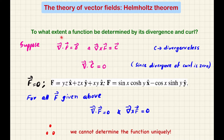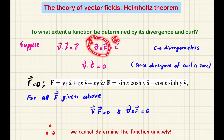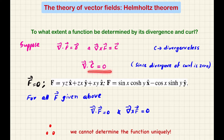Suppose you are given the divergence of a vector function: del·F = D, where D is a function, and del×F = C, where C is another vector function. For consistency, you can take C to be divergence-less, because the divergence of curl is zero. So the right-hand side is consistent: del·C = 0.